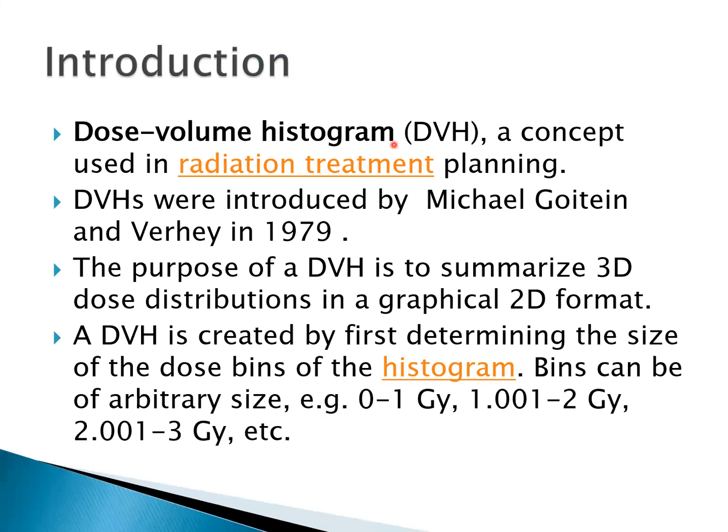Dose Volume Histogram is a concept used in radiation treatment planning, introduced in 1979 by Michael Viter. The purpose of DVH is to summarize the 3D dose distribution in a graphical 2D format.